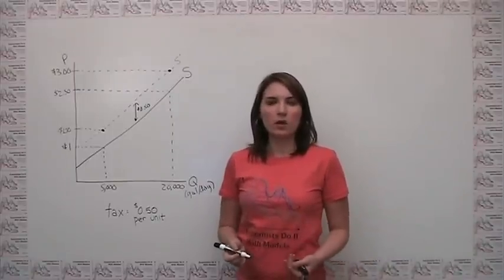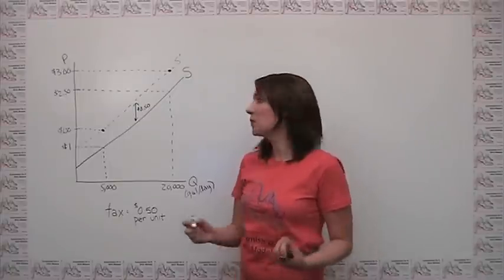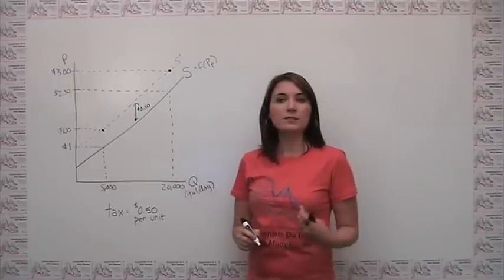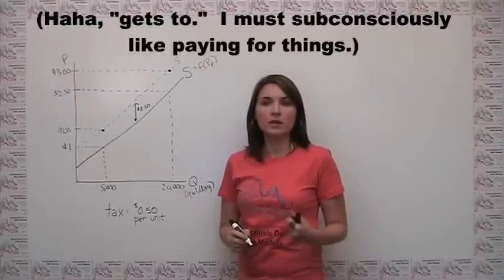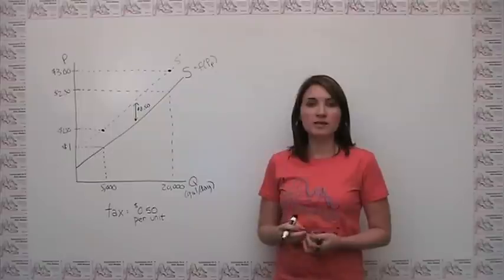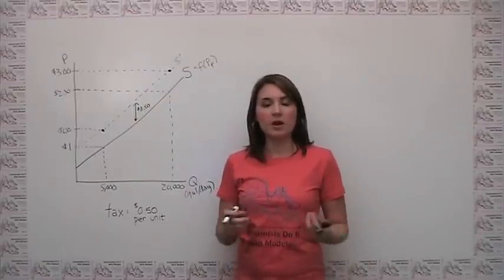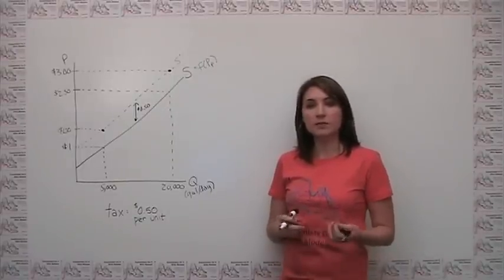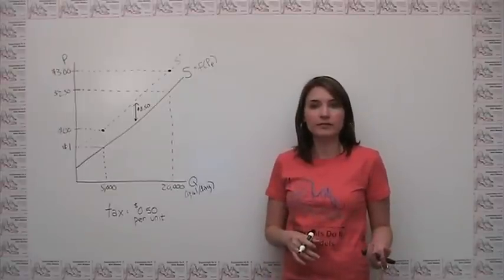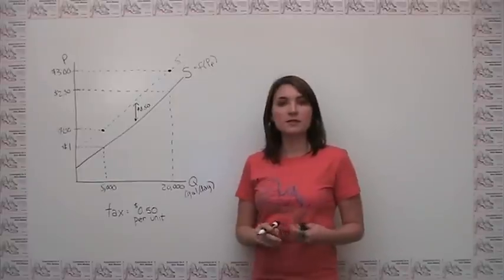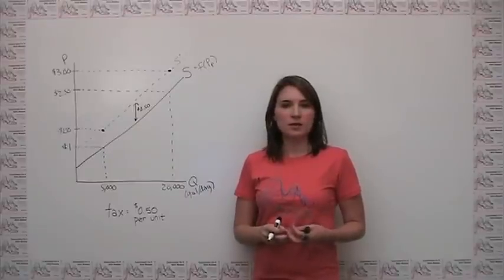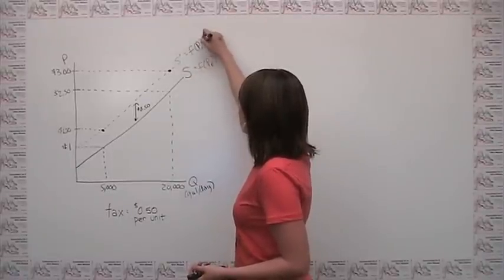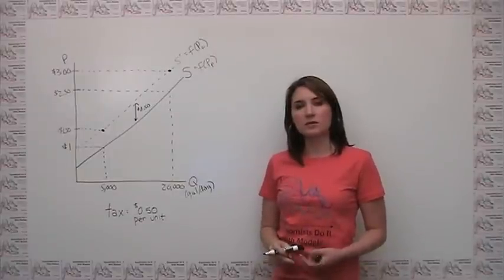Put another way, the supply curve is a function of the price that the producer gets to keep in its pocket — let's call this the price to the producer. And the demand curve is a function of the price that the consumer pays. This wasn't a big deal in our original supply and demand diagram since these two prices were the same. Now, however, the distinction becomes relevant, since we can't solve for equilibrium if supply is in terms of one price and demand is in terms of another. The new supply curve we drew is sometimes called an effective supply curve — it states the amount the producer is willing to supply as a function of the price the consumer pays, making it much easier to solve for equilibrium.